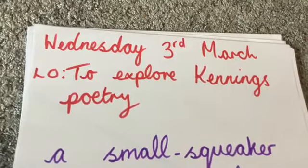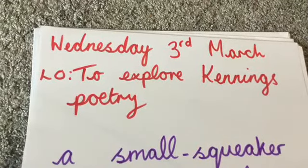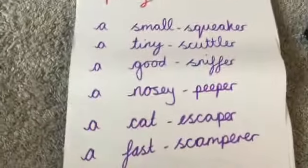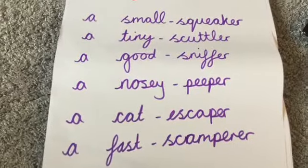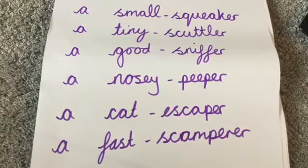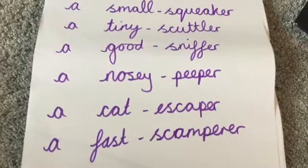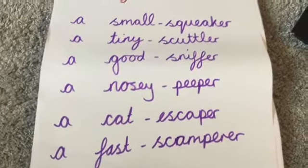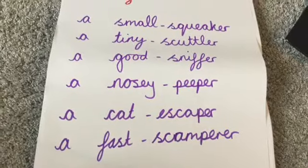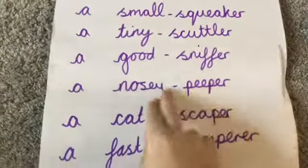I'm going to read two poems out to you and I want you to see if you can guess what these poems are about. So, this is the first one: A small squigger, a tiny scuttler, a good sniffer, a nosy peeper, a cat escaper, a fast scrambler. This poem describes a mouse.